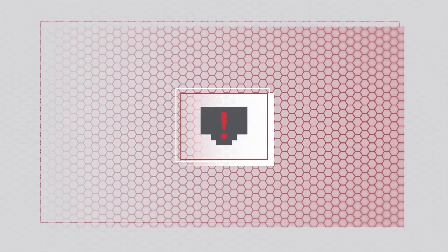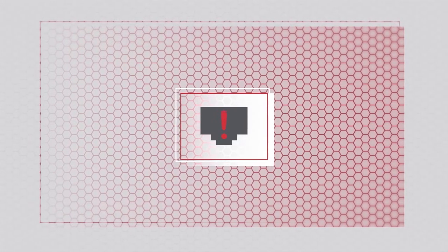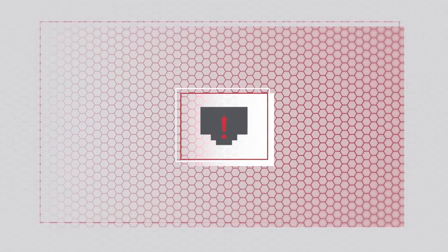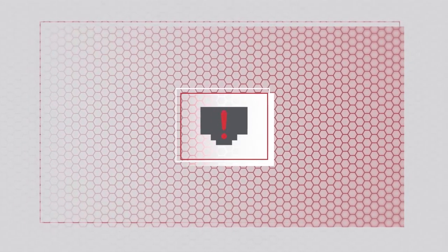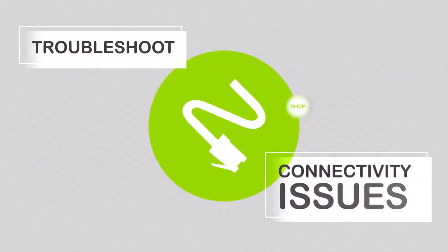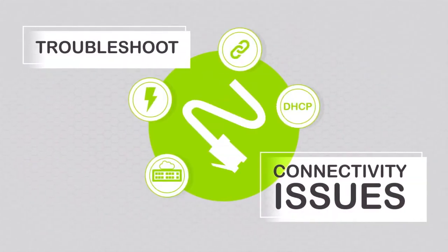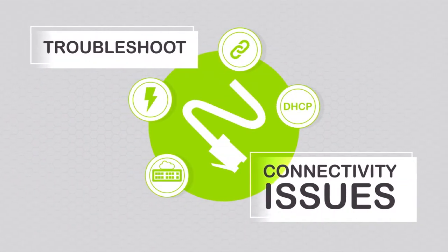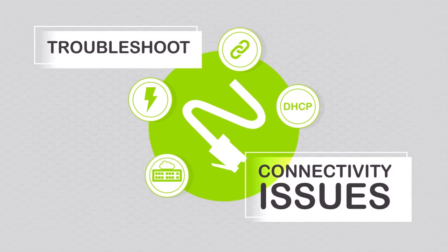Network connectivity issues can be a major source of frustration for end users and put IT professionals in the hot seat. That's why it's important to troubleshoot connectivity issues and identify problem domains on copper Ethernet links quickly.